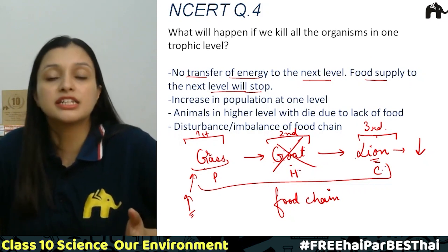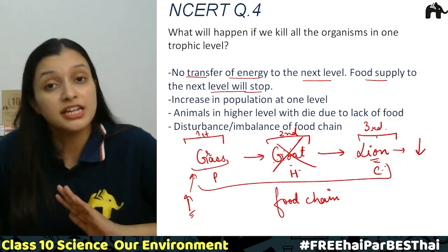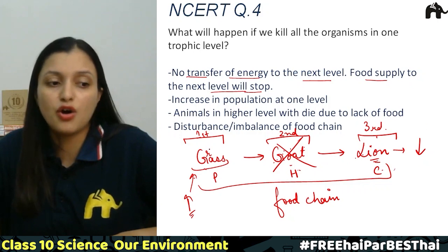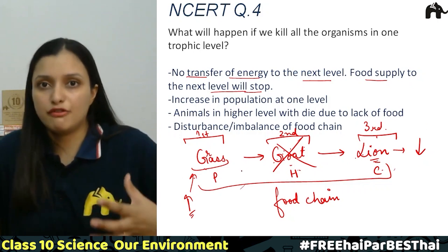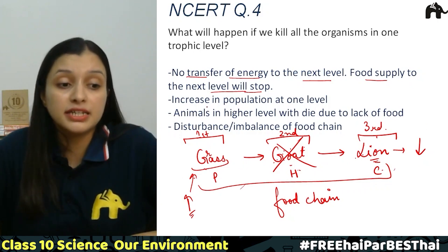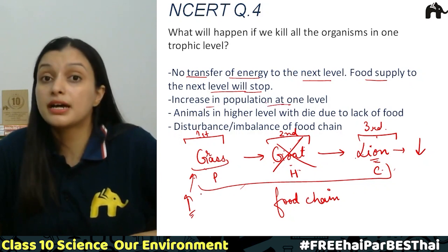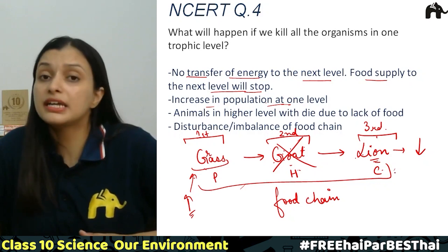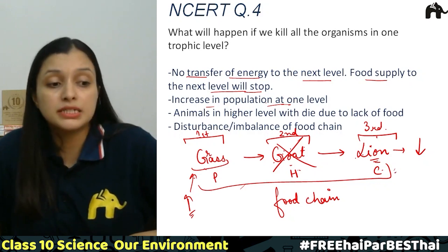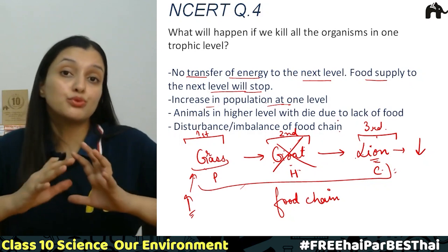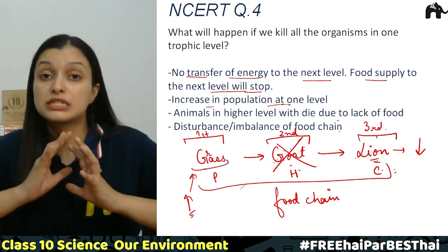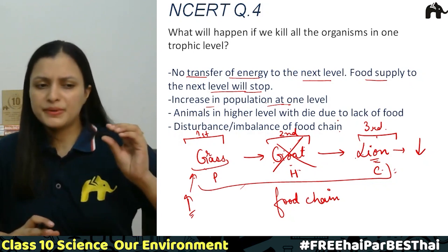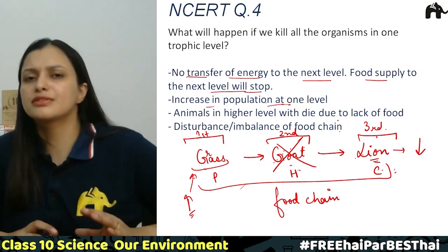इससे: there will be no transfer of energy to the next level — grass से energy goat को नहीं जाएगी तो third trophic level तक भी energy नहीं पहुँचेगी। Food supply of the next trophic level will stop, first trophic level की population increase होगी। Animals in the higher level will die due to lack of food — जैसा lion के case में discuss किया। Ultimately there is a disturbance or imbalance in the food chain।